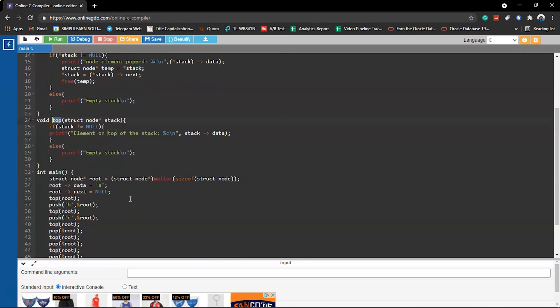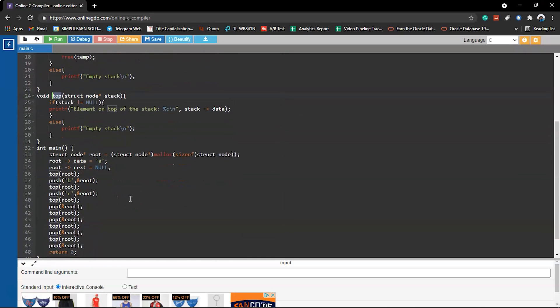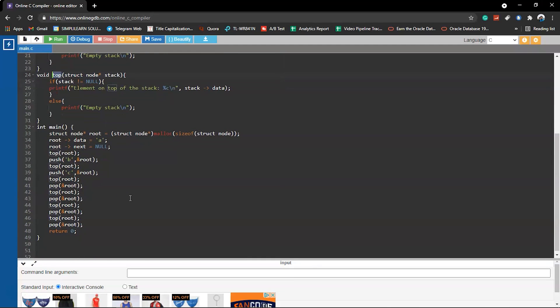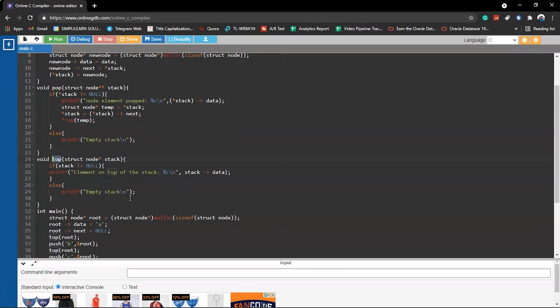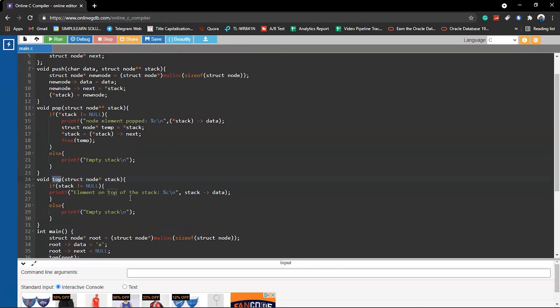Don't worry about the code. This particular code snippet will be attached in the description box below, or you can request us and we will have it sent to your mail ID. You can understand the code and try executing in your local system.